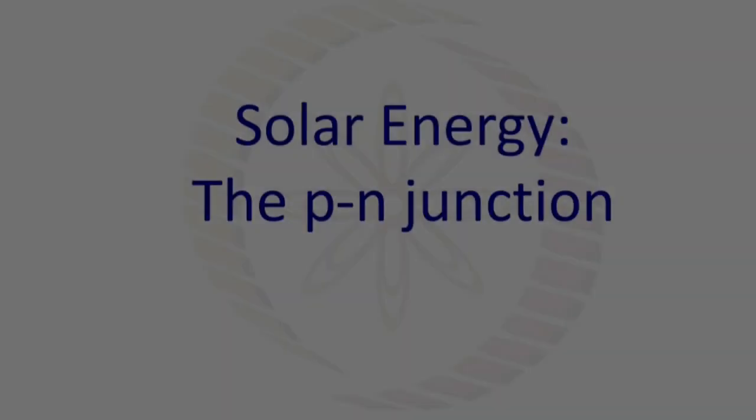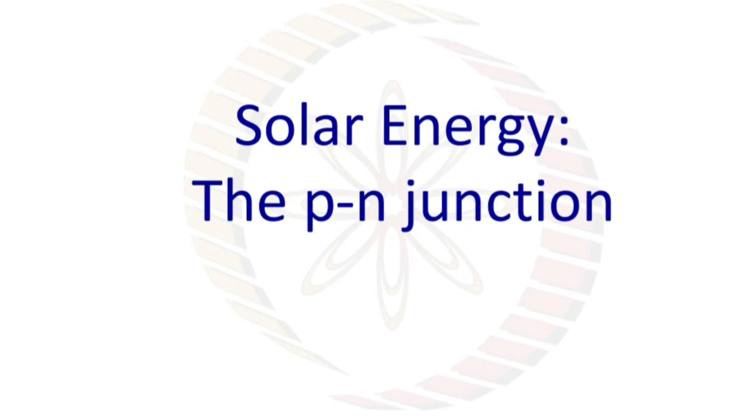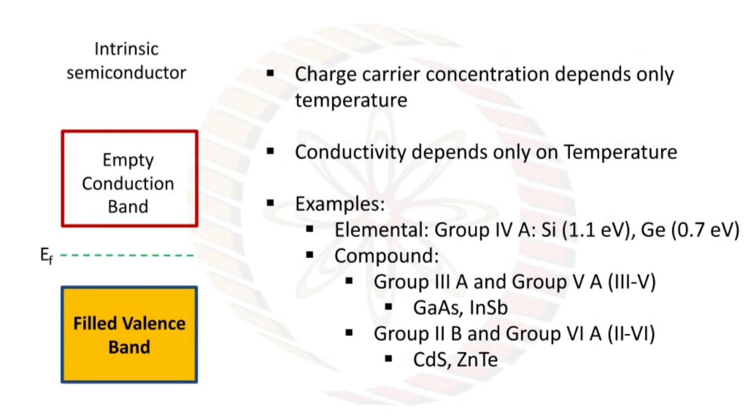Now we have to see the P-N junction. For an intrinsic semiconductor, the Fermi energy level is just halfway between empty conduction band and filled valence band. The charge carrier concentration depends only on temperature and conductivity depends only on temperature. Examples are group 4A, that is silicon and germanium.